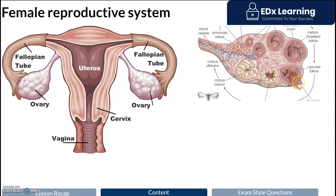After the ova gets released, it's very important to note that this follicle is still active — it's still secreting hormones that we're going to discuss soon. Under certain conditions, this follicle will degenerate and eventually form scar tissue in the ovary.